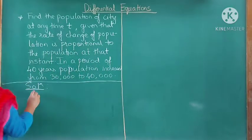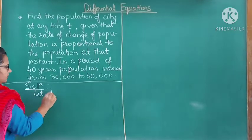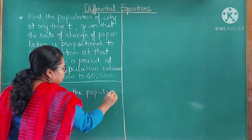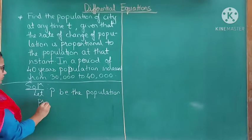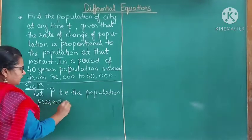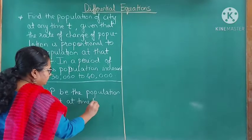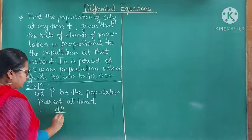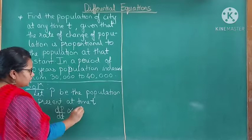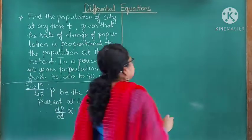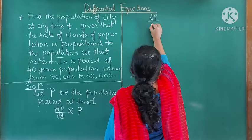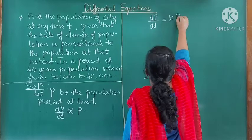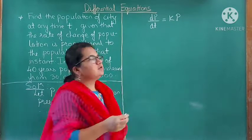Let us start solving the problem. Let P be the population present at time t. Therefore, according to the given condition, the rate of change of population dP/dt is proportional to the population present at that instant. That is, dP/dt = k·P, where k is the proportionality constant.